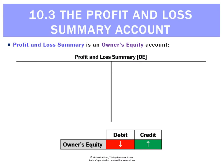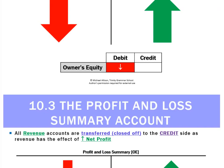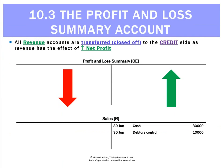The Profit and Loss Summary account follows the rules of an owner's equity account, and that makes sense because profit will make owner's equity or capital go up, and losses or expenses will make it go down. When it goes up it's a credit and when it goes down it's a debit. So we'd expect to see the revenues on the credit side and the expenses on the debit side.